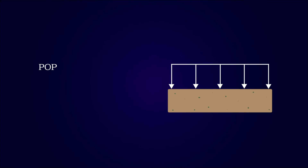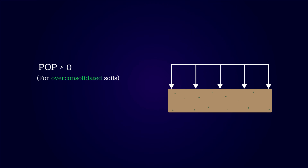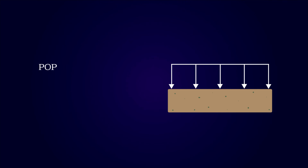For normally consolidated soils, the pre-overburden pressure is equal to zero, since the soil has not experienced a larger load than now. For overconsolidated soils, the pre-overburden pressure equals the maximum load ever experienced. The pre-overburden pressure is similar to the overconsolidation ratio, denoted OCR, since they both describe the stress history of soil.